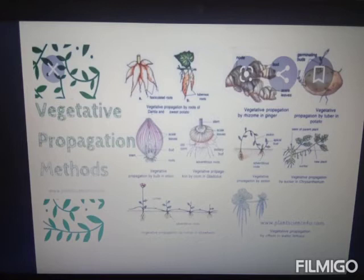Budding is of three types: exogenous, endogenous, and strobilation. Strobilation means the repeated formation of similar segments by the process of budding. The segmented body is called a strobila. An example of strobilation is Aurelia.